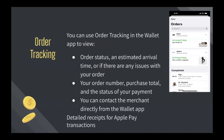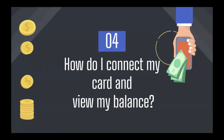Apple Wallet also has an order tracking feature. You can view order status, estimated arrival time, any issues with your order, your order number, purchase total, and the status of your payment. You can also contact the merchant directly from the wallet app and get a detailed receipt for Apple Pay transactions.